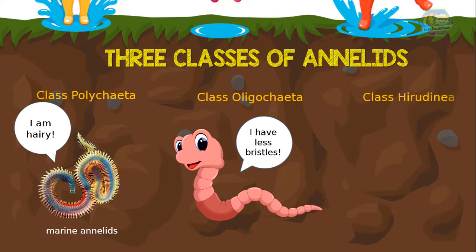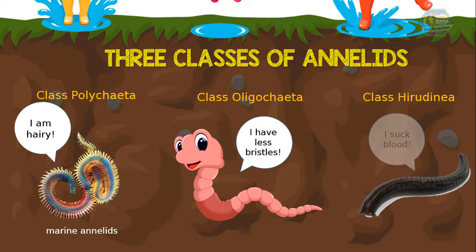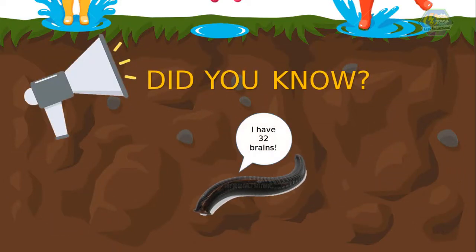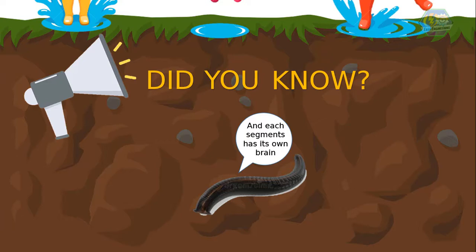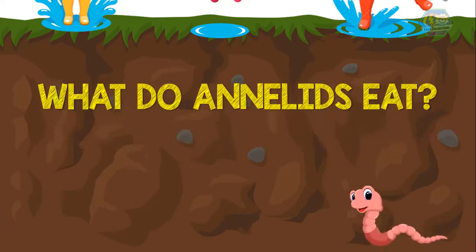And lastly, Class Hirudinea — they are also marine, freshwater, and terrestrial worms. One example is leeches. We might not like this one because they could bite you and suck your blood. Fun fact, learners: did you know that leeches have 32 brains? A leech's internal structure is divided into 32 separate segments, and each of these segments has its own brain.